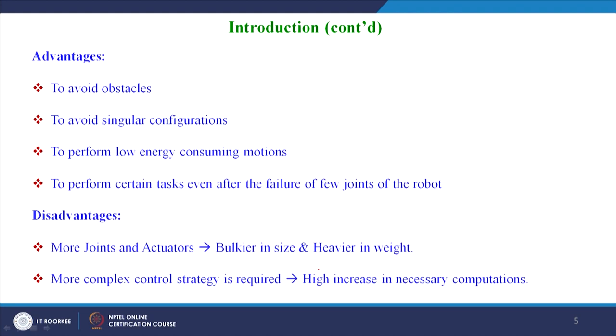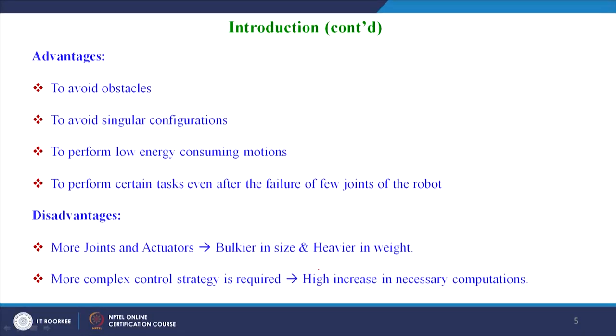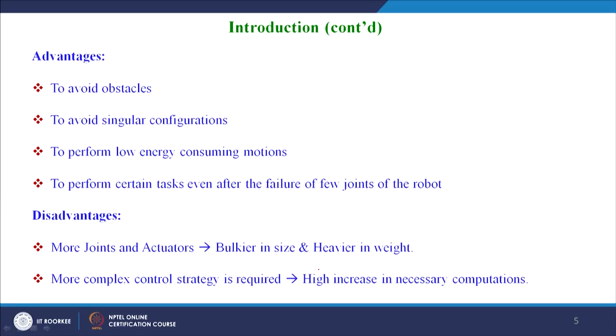Coming to the advantages and disadvantages of redundancy: the advantages are that it is advantageous to avoid obstacles, to avoid singular configurations of robotic manipulators, and to perform low-energy-consuming motions. Finally, if some joints are not functioning due to failure, the task can still be achieved by the remaining joints. The disadvantages are that the system becomes bulkier in size and heavier in weight because of more joints and actuators, and it requires a more complex control strategy because of the increased computational demands.